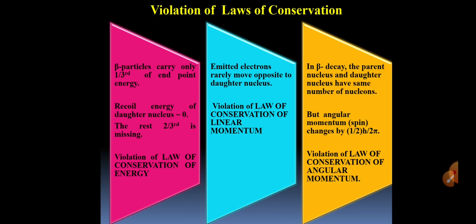If we consider law of conservation of energy, then we can see in this spectrum that beta particles carry only one-third of endpoint energy. Moreover, required energy of daughter nucleus is zero. The rest two-thirds of total energy was missing, which violates the famous law of conservation of energy.